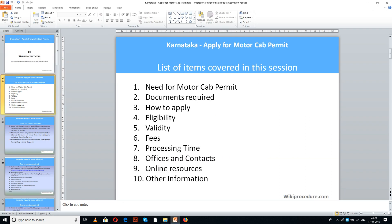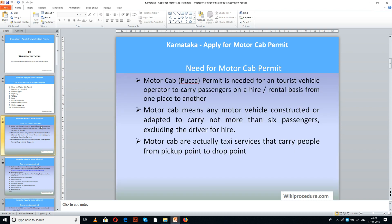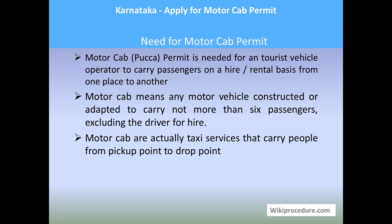List of items covered in the session today: need for motor cab permit, documents required, how to apply, eligibility, validity, fees, processing time, offices and contacts, online resources, and other information. This procedure is sponsored by wikiprocedure.com.